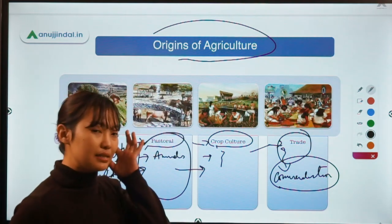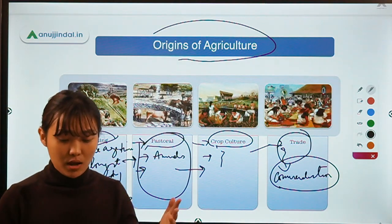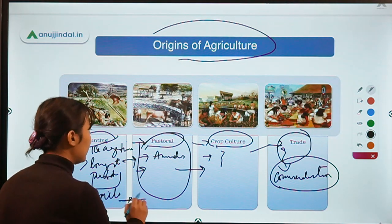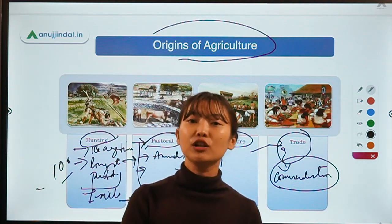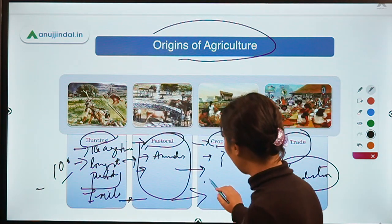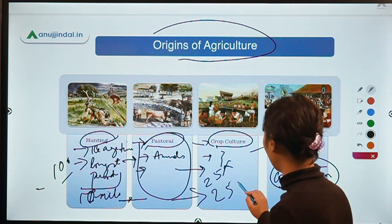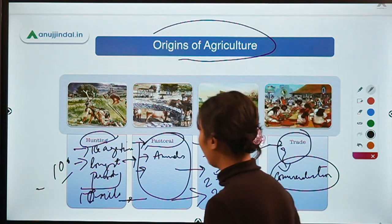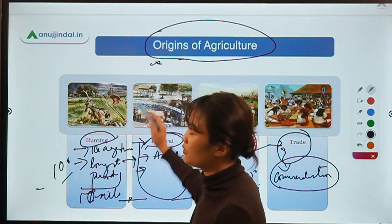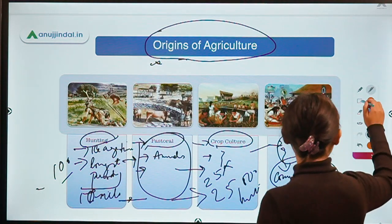The impact of agriculture on population is significant. During the hunting age, the population was around seven million. Right after the discovery of agriculture, the population rose drastically — about 25 times — to around 175 million people. This tells you how important agriculture is in human civilization.